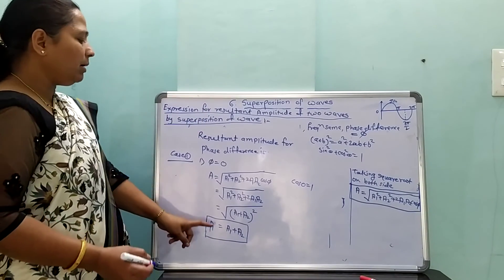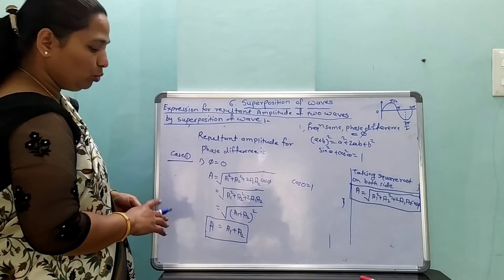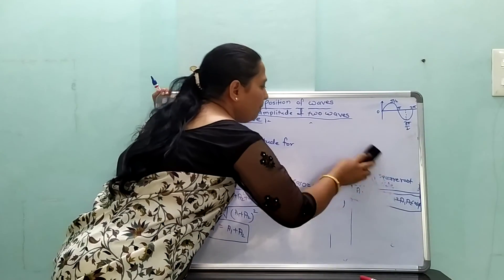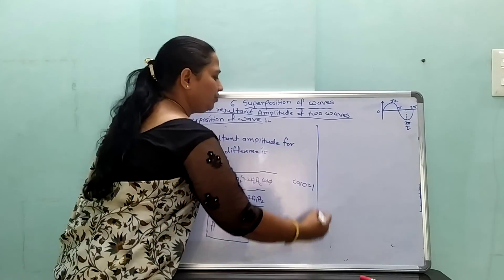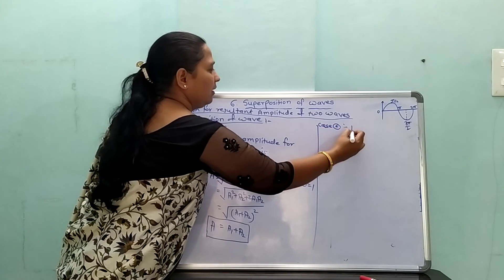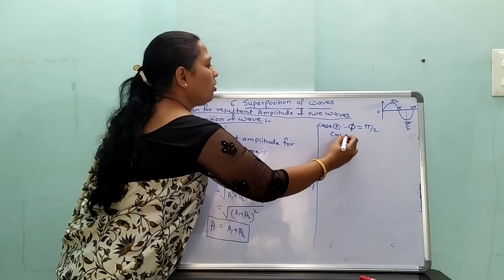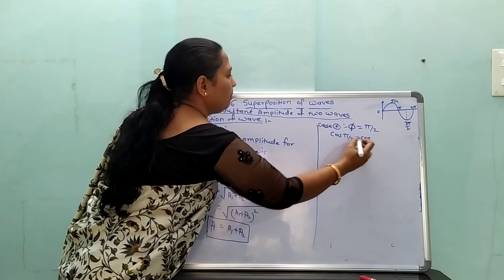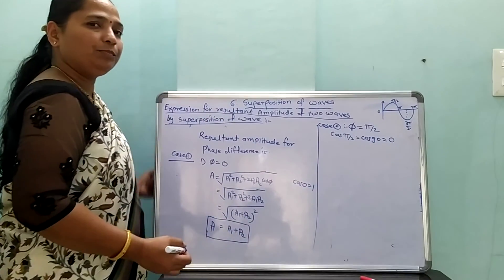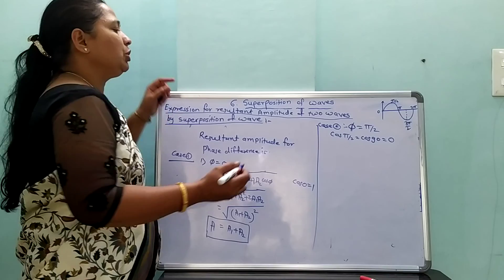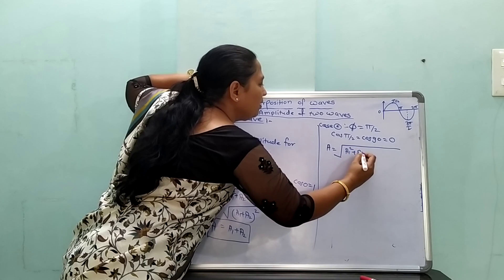When phase difference is π/2 — Case 2: φ = π/2. cos(π/2) = cos 90° = 0. Substituting into the formula, the resultant amplitude A = √(A1² + A2²).